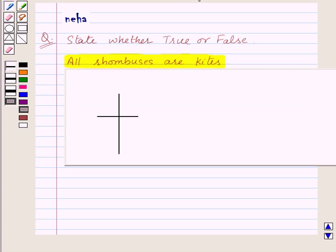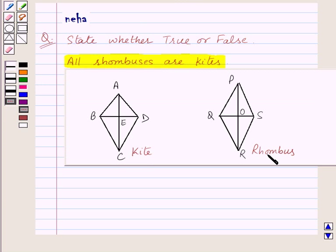So let's see its solution with the help of this figure. Here we have a kite and a rhombus.